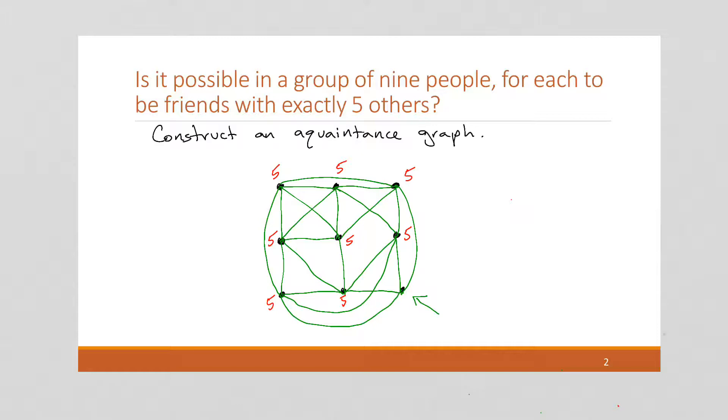But the question is, did I just do this wrong? Is there a better way of doing it? And the answer to that is no. It's actually impossible for a group of nine people for each of them to be friends with exactly five others, and so that's what we're going to do next: we're going to prove that.